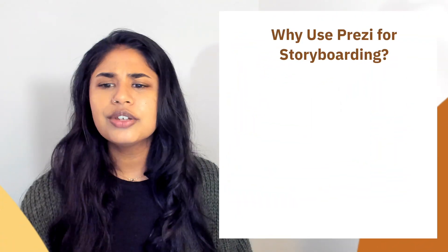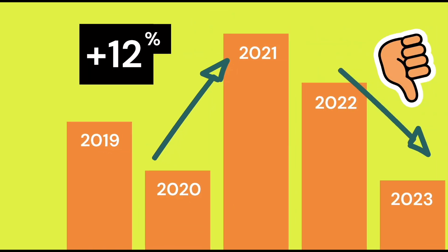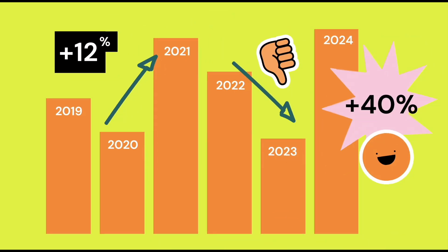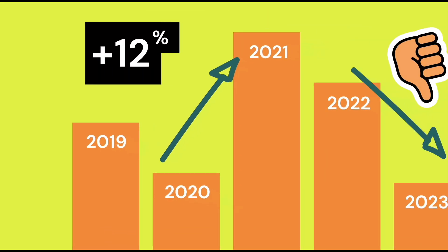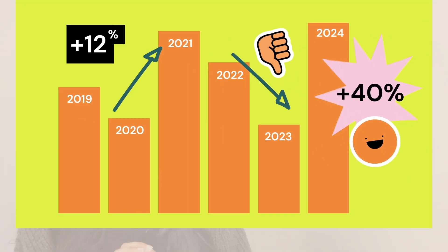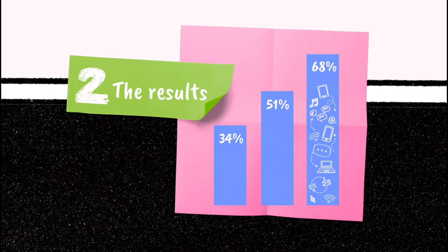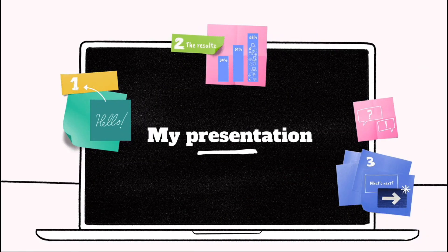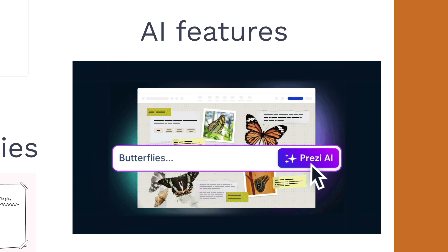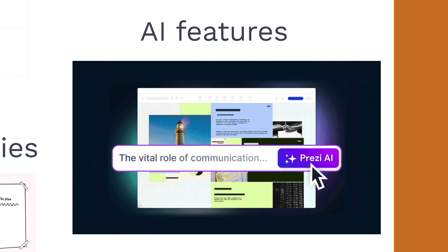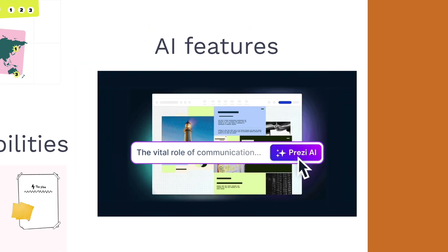First, why should you use Prezi for storyboarding? Our non-linear design makes it perfect for visualizing your ideas. You can map out scenes or sections, create connections between them, and adjust the layout as needed — all in one place. Prezi's zooming capabilities let you focus on both the big picture and the finer details. And if you don't have much time, you can leverage the Prezi AI Presentation Maker, which will speed up the creation process immensely.